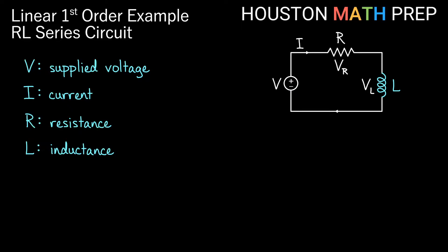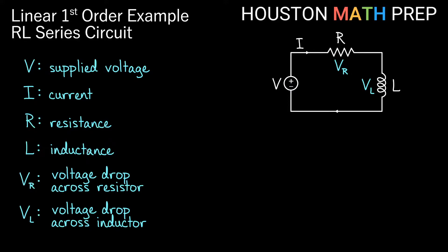Our V sub R and our V sub L are actually what we call the voltage drop across the resistor and across the inductor, respectively. Our resistor here, L for the inductor because L is inductance. So we get some voltage drop across those in the loop.